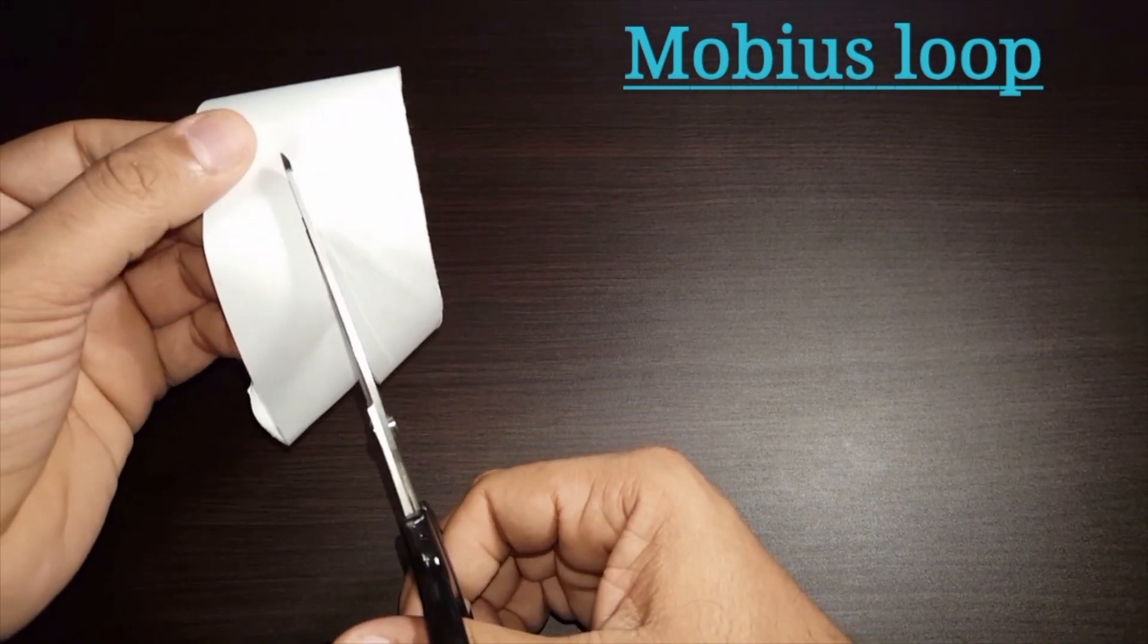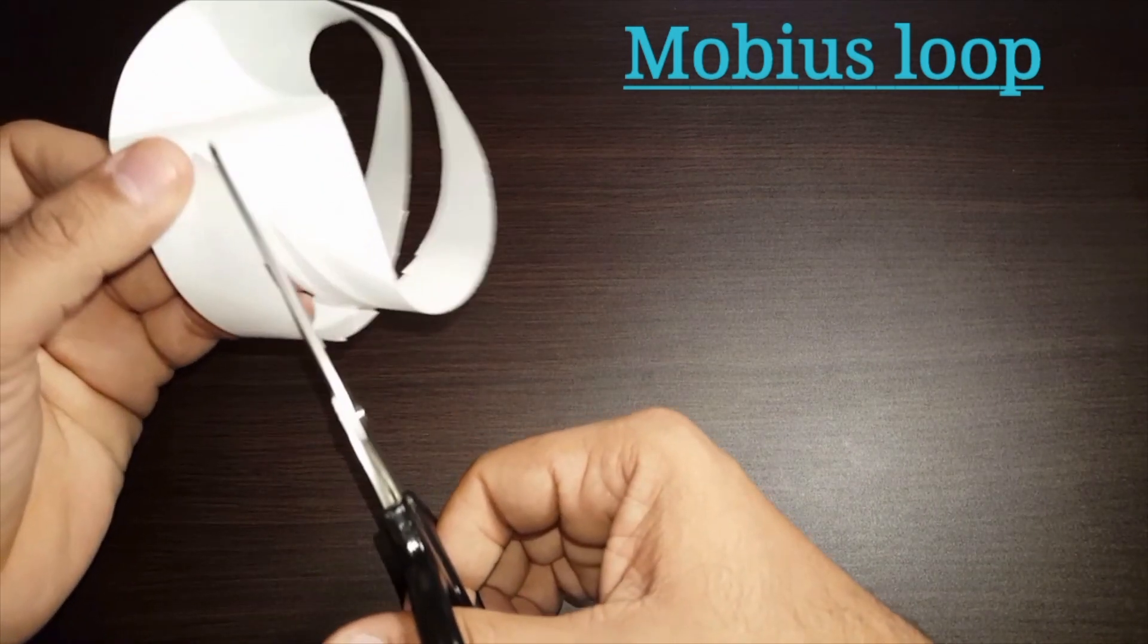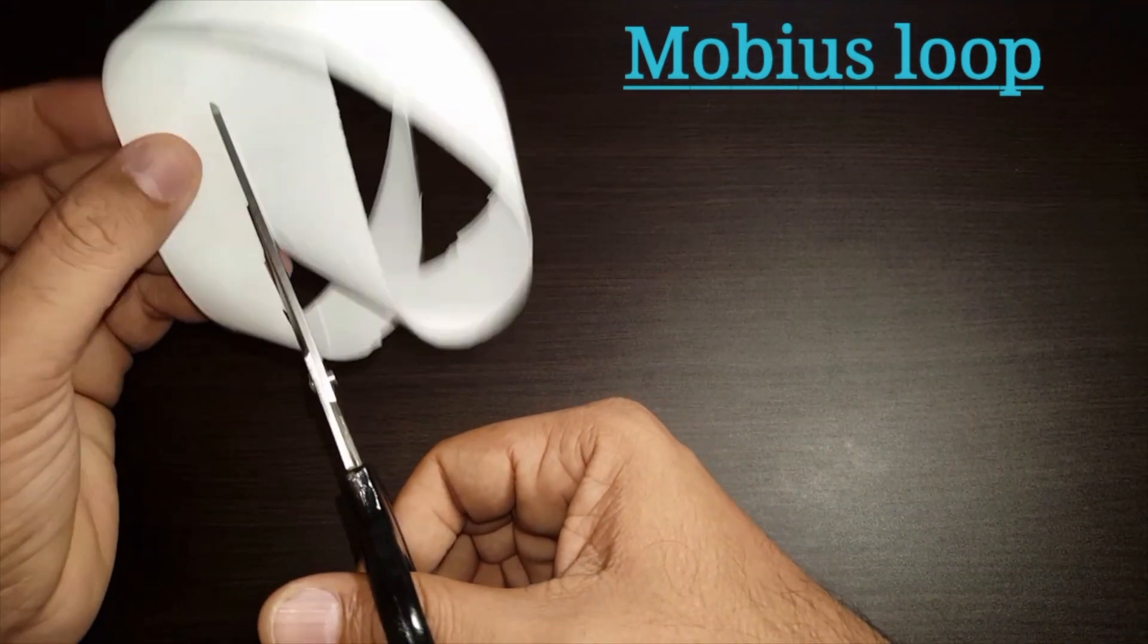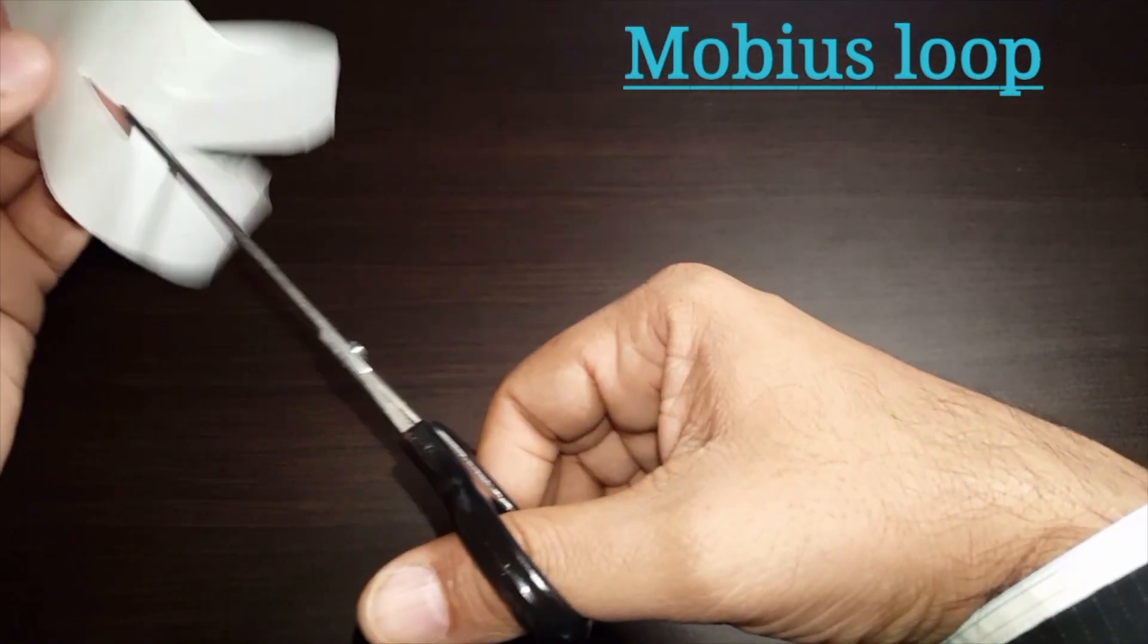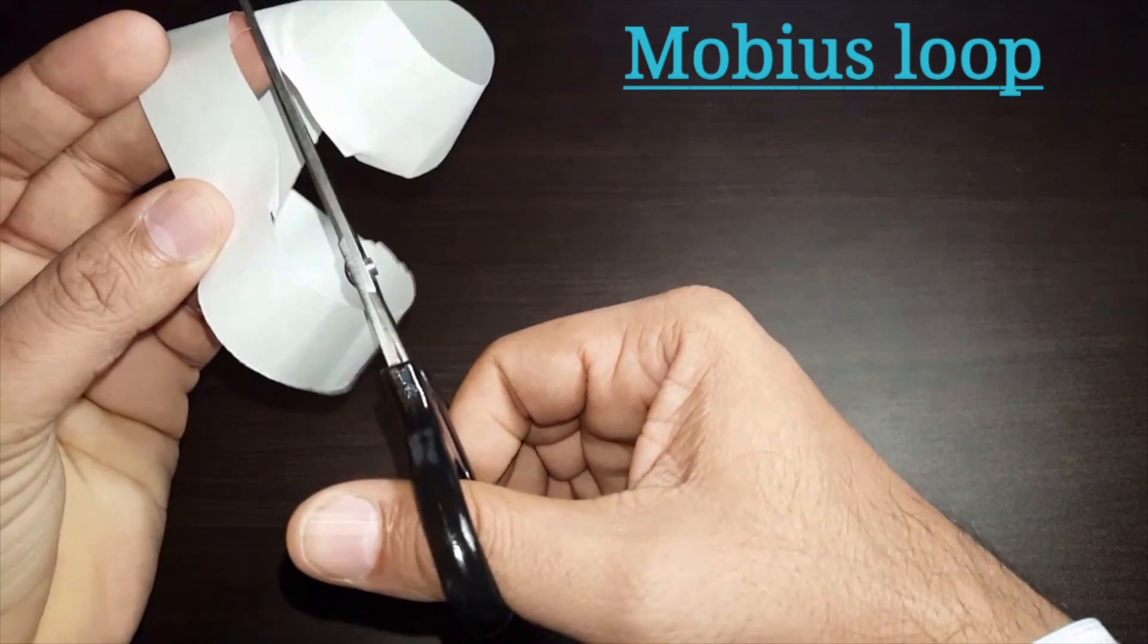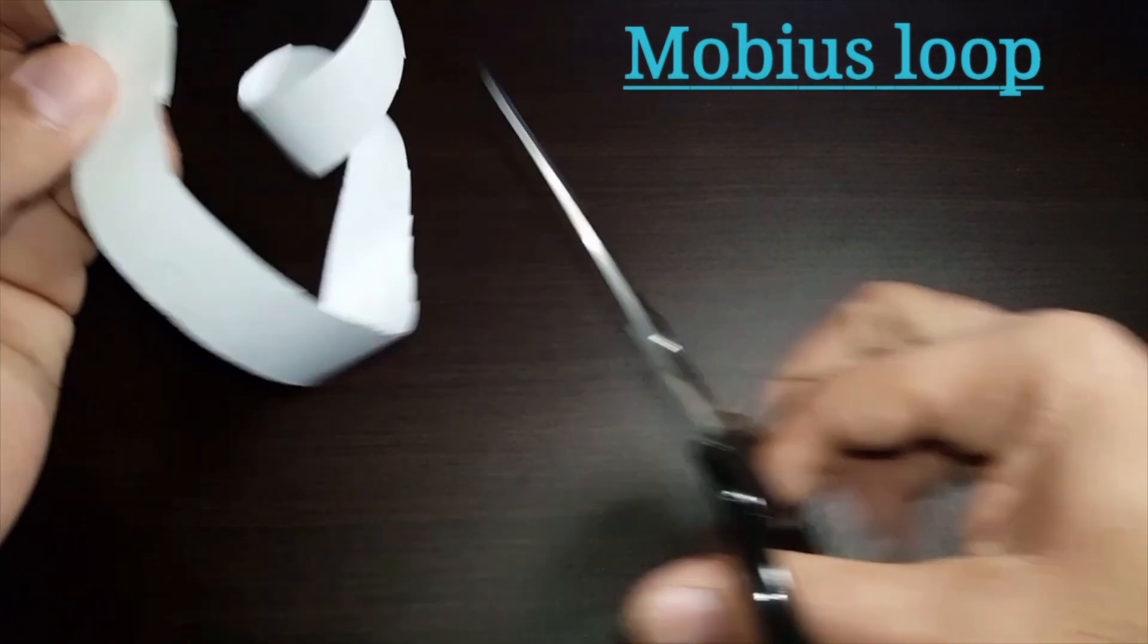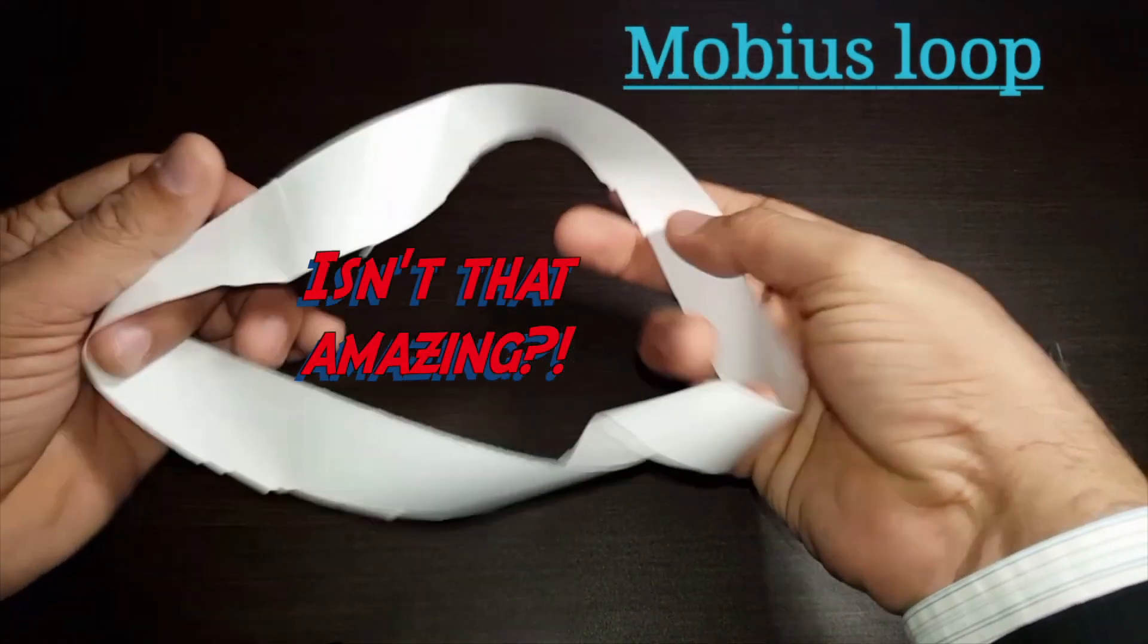Ask them to cut it in the middle all the way. And what happens usually in a normal loop, you'll end up with two thinner loops. But look what happens in a Mobius loop. After you cut it in the middle, it stays a single loop.